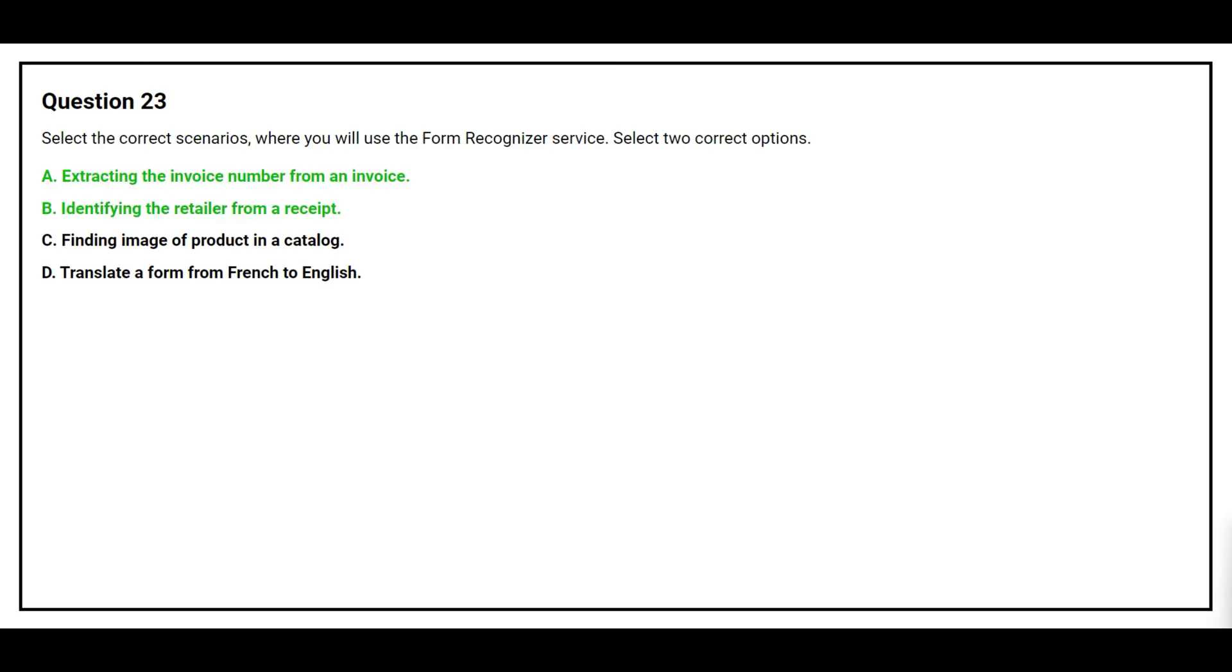The correct answers are option A, extracting the invoice number from an invoice, and option B, identifying the retailer from a receipt.